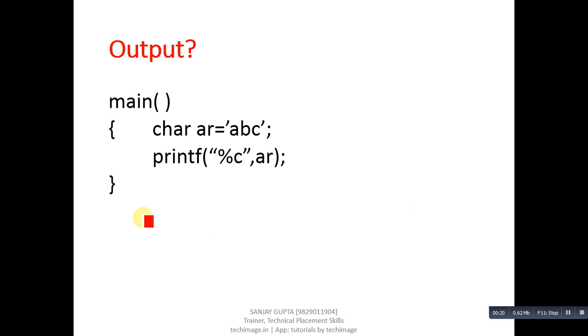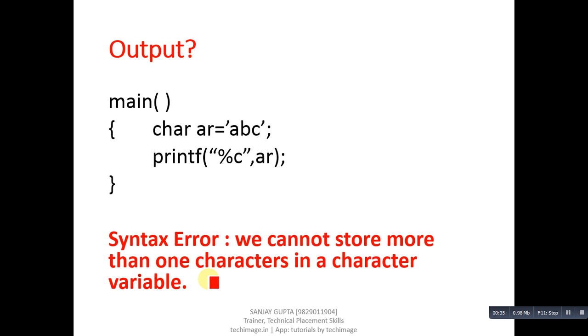This is the first code segment. You have to identify its output. Here, character variable ar is declared which is receiving ABC as string, but it is enclosed in single quotes. Then printf is printing ar with %c. So this code segment will not provide any kind of output.